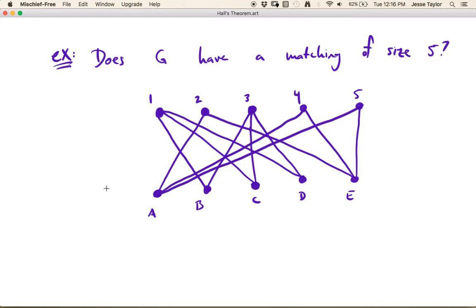So again, you may want to pause and try and think about this for a little bit and see if you can find a set that violates Hall's condition on either side. So it's possible there's more than one, but the set that I had in mind when I created this example is BCD.